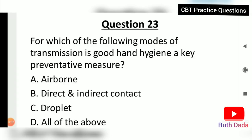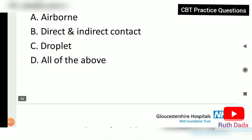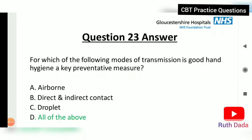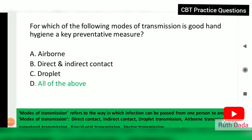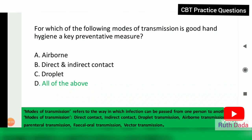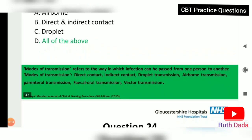Question 22: Which of the following modes of transmission is good hand hygiene a key preventive measure for — airborne, direct and indirect contact, droplets, or all of the above? The answer is all of the above. Modes of transmission include direct contact, indirect contact, droplet transmission, airborne transmission, parenteral transmission, fecal transmission, and vector transmission.